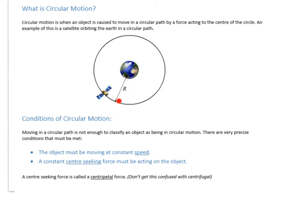The object must also be acted on by a constant center-seeking force — this is the one people get tripped up on in questions. This center-seeking force is called a centripetal force; centripetal actually means center-seeking. Make sure you're not confusing this with centrifugal — you will never come across centrifugal forces in A-level physics. We're always dealing with centripetal forces.